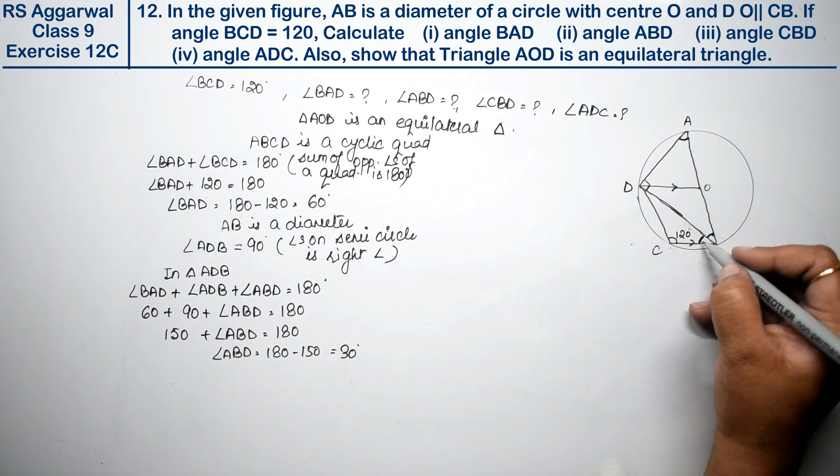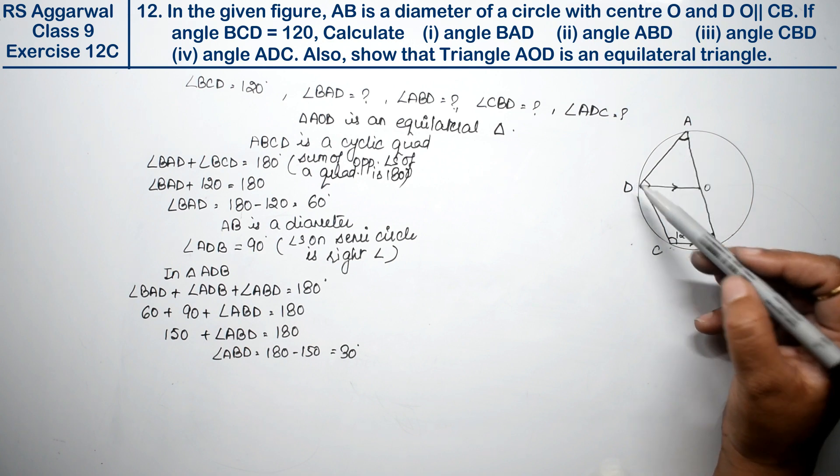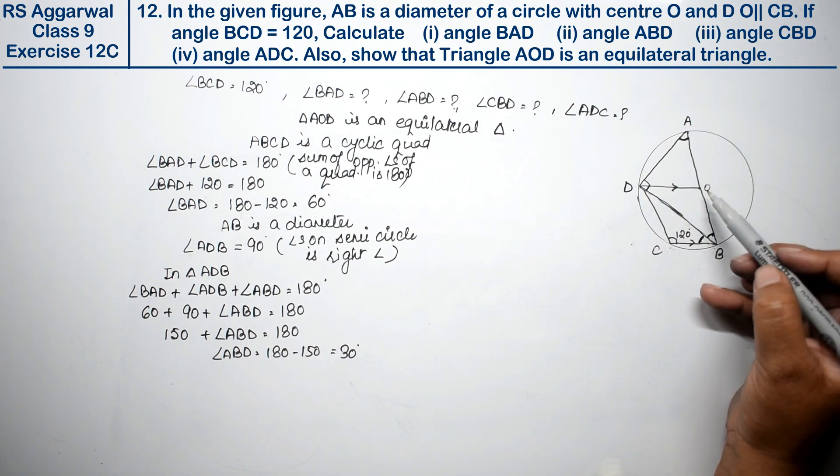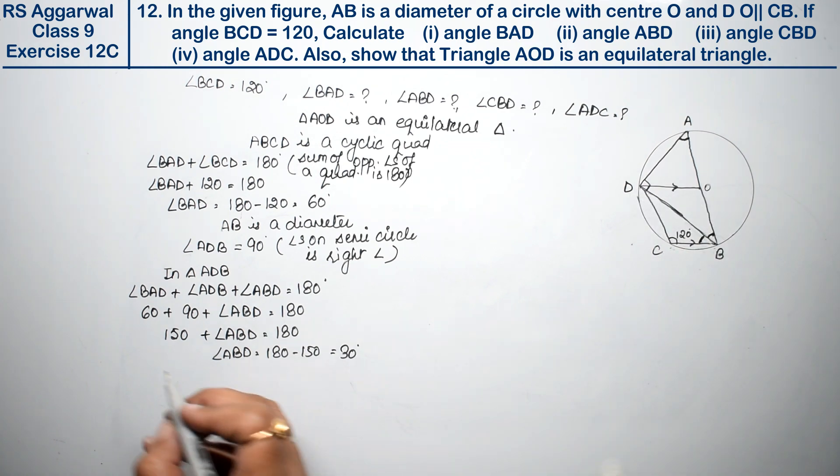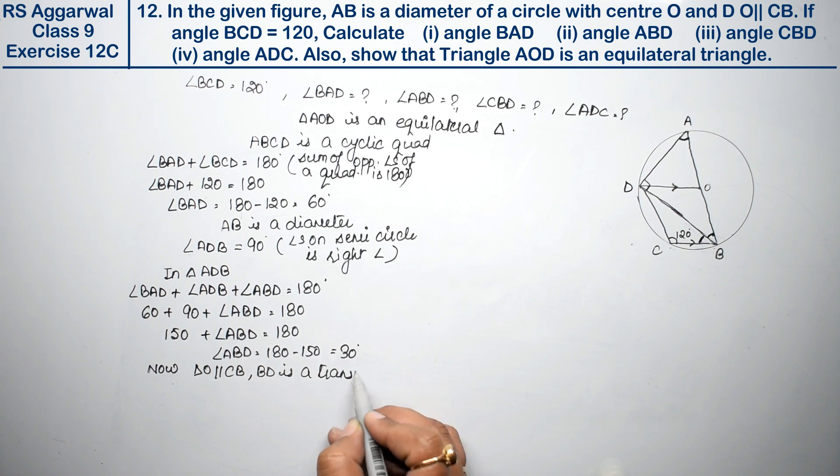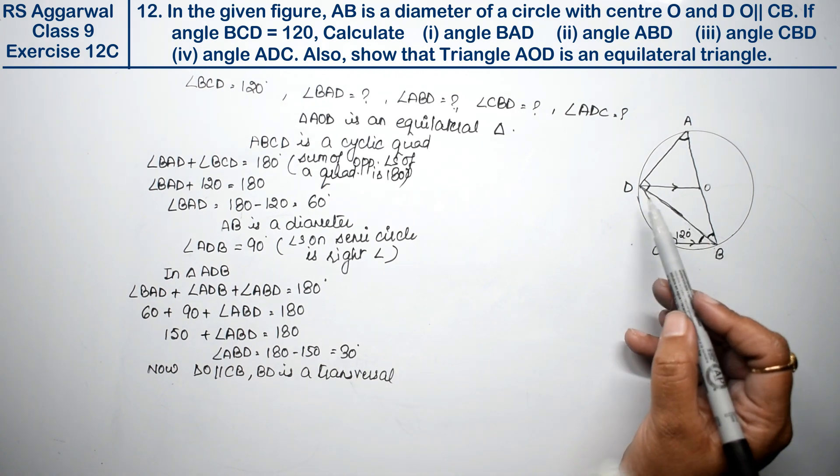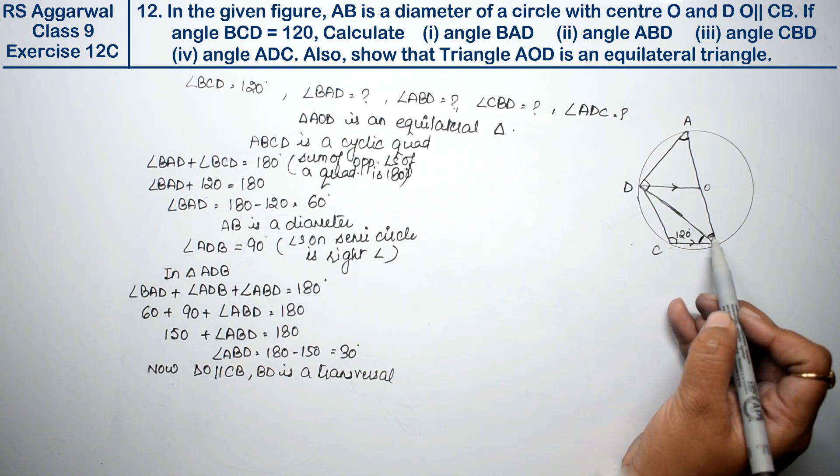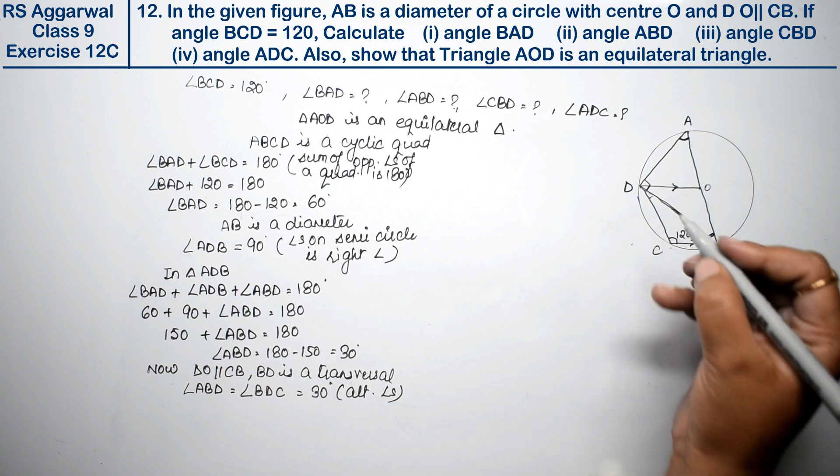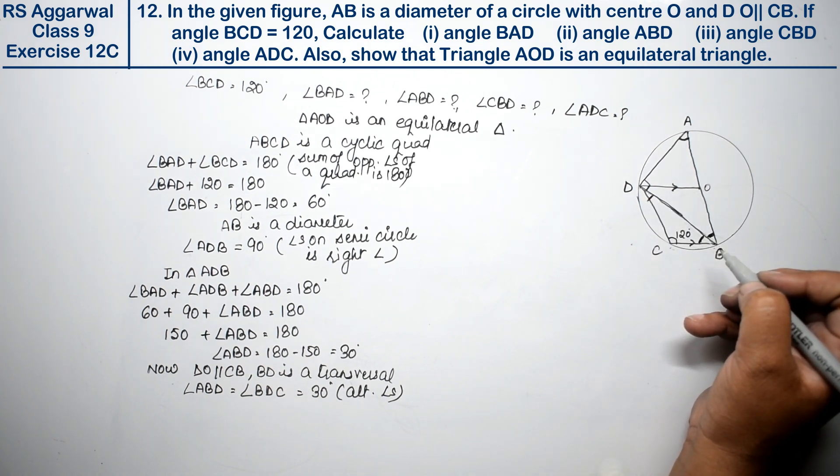Now for angles CBD and ADC. We know DO is parallel to CB, and BD is a transversal. When BD is the transversal, angle ABD equals angle BDC because these are alternate angles. So angle BDC is 30 degrees.